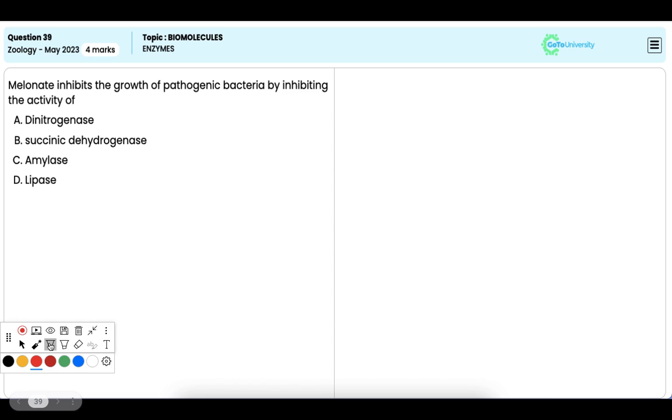In this question, you have to point out that malonate inhibits the growth of pathogenic bacteria by inhibiting the activity of which enzyme.